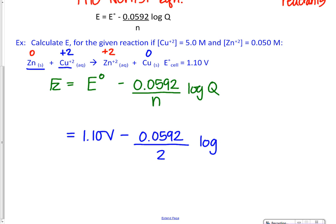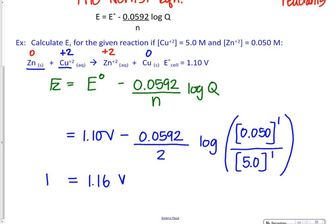Now Q is going to be calculated by taking the concentration of the zinc plus ion, which is the 0.050 molar. And we would normally put it to its coefficient, but since the coefficient is just a one, we're just raising it to the power of one. And then we're dividing by the concentration of the copper ion, which was five molar. Again, it has a coefficient of one. So we are just raising it to the first power. So you can use this problem in your math, or you can do the math on your own. And hopefully, you should get a value of 1.16 volts for the E, the cell EMF under non-standard conditions.